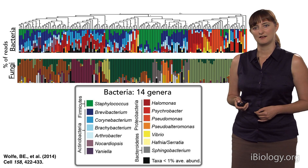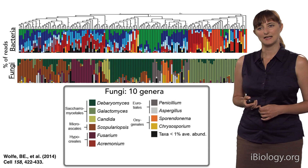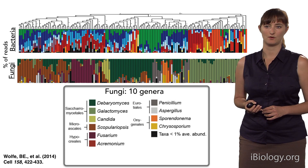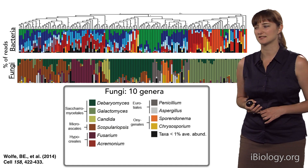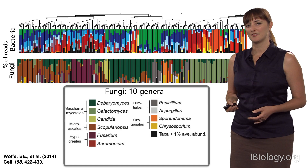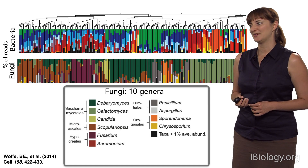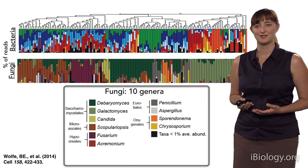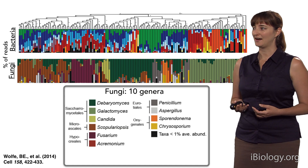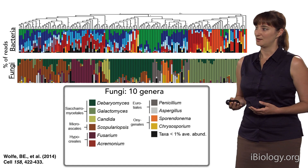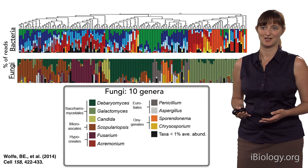Looking at the fungal portion of the diversity, we see a slightly smaller set — 10 dominant genera found over and over again in different cheeses. Some have been studied before, such as Debaromyces and Galactomyces, but then we have a wonderful collection of other fungi about which we know very little. For example, Scopulariopsis, visible in brown, is very abundant in many of the samples, and we know virtually nothing about this organism, yet we think it has some really interesting roles in terms of interactions.